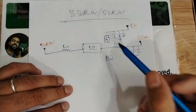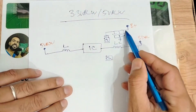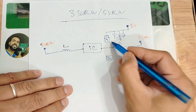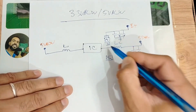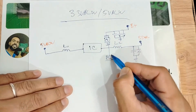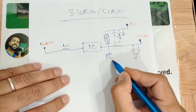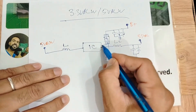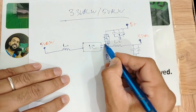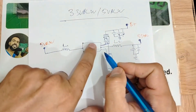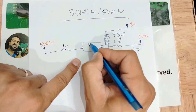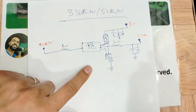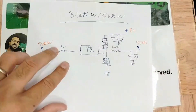So three ceramic capacitors in the input. The source of the upper MOSFET will be connected to the drain of the lower MOSFET, and then the source of that MOSFET will be connected to ground. These two MOSFETs are controlled by the IC — we call it the 3V/5V control IC.